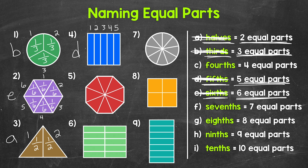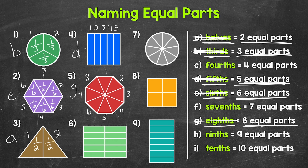Moving on to number 5, this whole has been divided into 1, 2, 3, 4, 5, 6, 7, 8 equal parts. We call 8 equal parts eighths. So let's put a G next to number 5 and cross off eighths. Each one of those equal parts is 1 eighth of the whole.